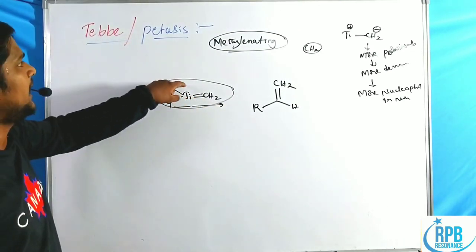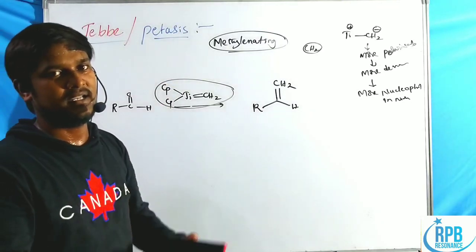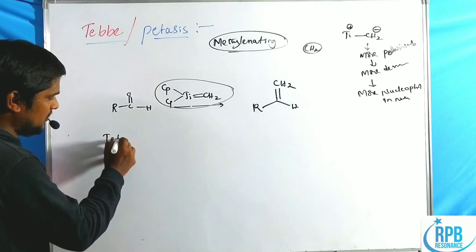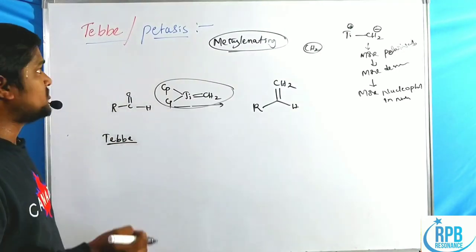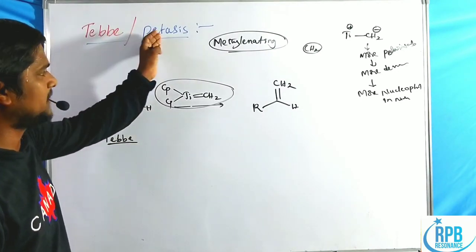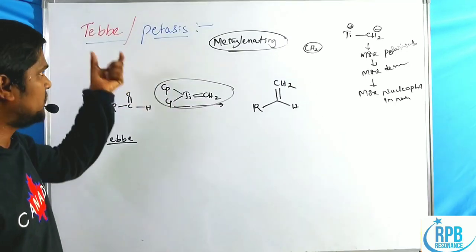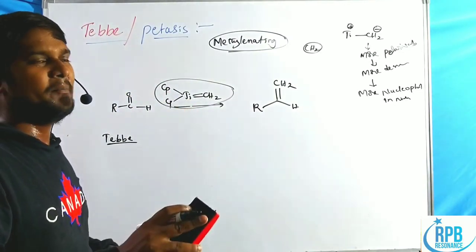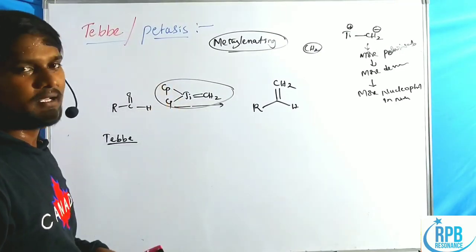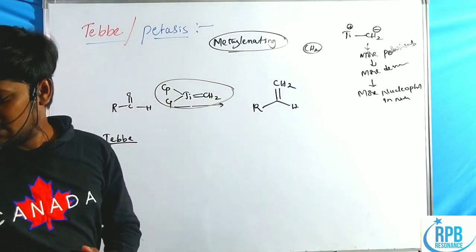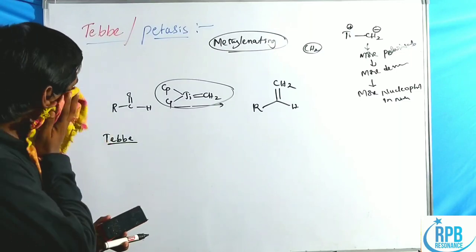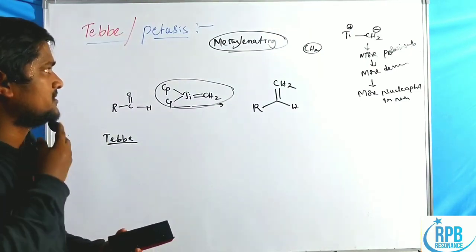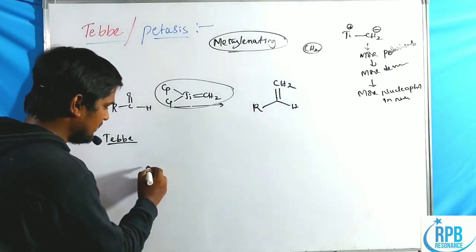The titanium alkylidene complex can be prepared by two methods: the Tebbe preparation and the Petasis preparation. Both produce titanium alkylidene complexes but via different routes. We will now go through each preparation separately.